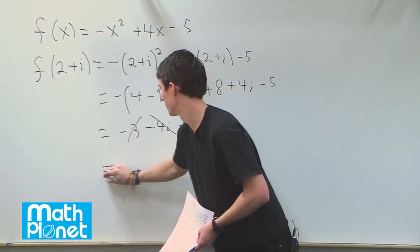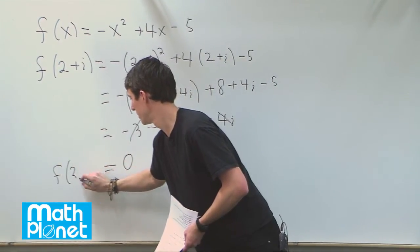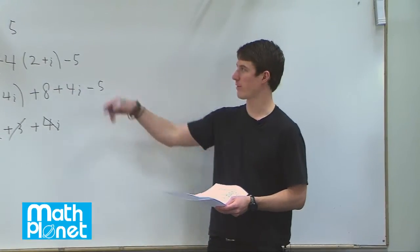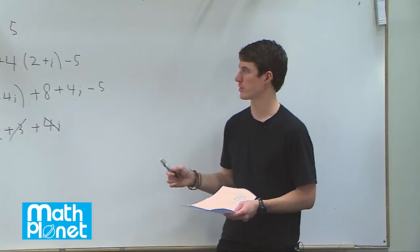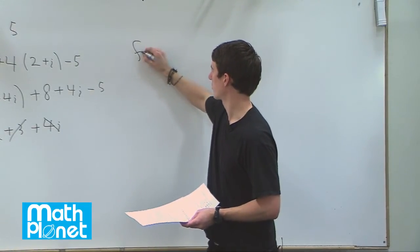So in fact, we just get this function, 2 plus i, is equal to zero. Now we'll evaluate the function again using the conjugate of 2 plus i, which is, of course, 2 minus i. So let's just do that.